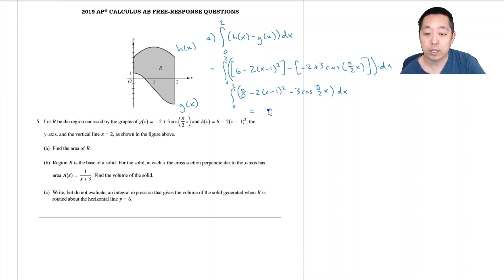So this is going to be 8x minus, the integral of this is minus 2 thirds x minus 1 cubed. I do power rule with technically a u-substitution, not that important. You could do this without a specific u-substitution, but you could do u-sub if you wanted to make sure you do it analytically correct.